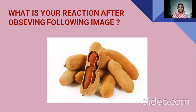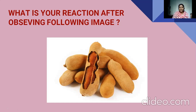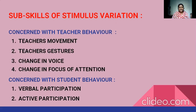What can you see here? What is your reaction after observing this image? How do you see this image? This image is acting as a stimuli. Just recall the name of the skill — that is stimulus variation. So what happened after seeing this image? There was water, that water came. So it was our first response after seeing this image. This is the skill of stimulus variation.